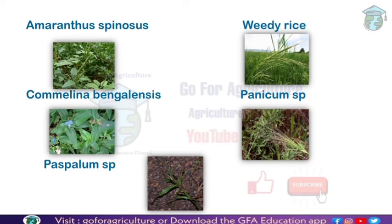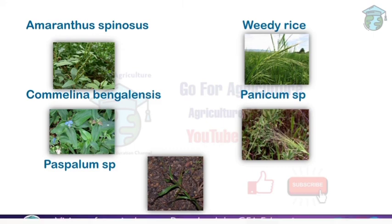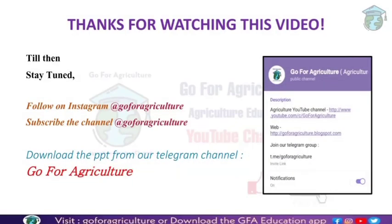These are the five weeds you have learned in today's lecture. Let's see the trick one final time: 'Amar from Spain said we came to Bengal and panicked because we lost our passport.' Amaranthus spinosus, weedy rice, Commelina bengalensis, Panicum species, and Paspalum species — these are the five weeds of rice.